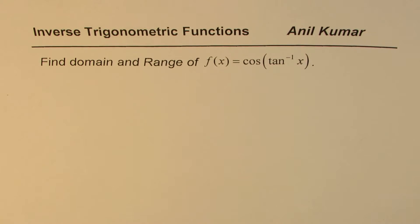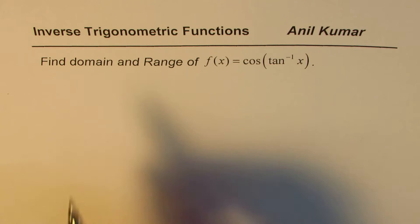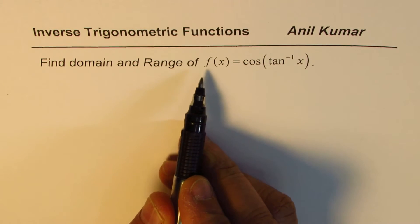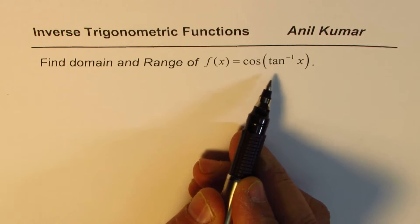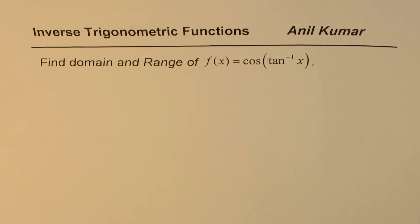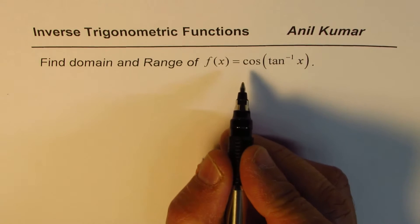I'm Anil Kumar sharing with you a question from my subscriber who wants to understand how to find domain and range of composite inverse trigonometric functions. I've taken up this example which is find domain and range of f(x) equals cos(tan⁻¹(x)).